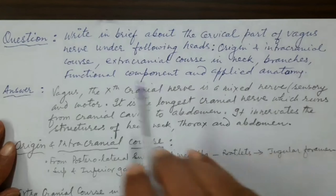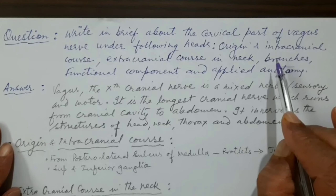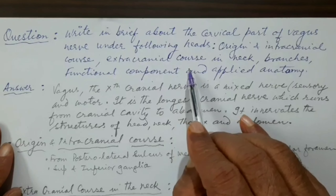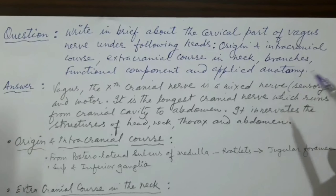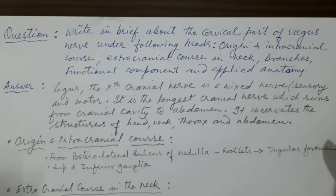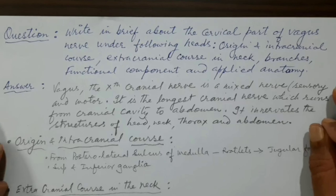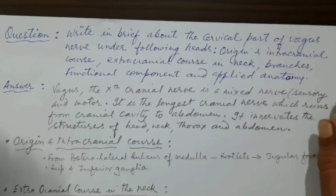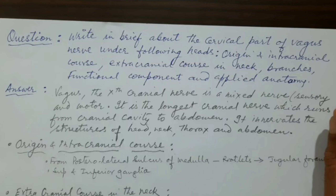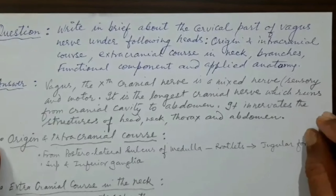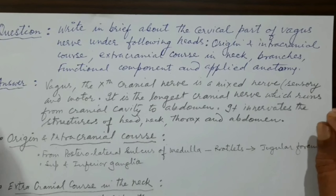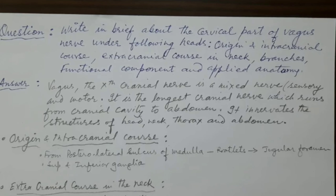The question is: write in brief about the cervical part of the vagus nerve under the following heads — origin, that means its attachment onto the brain stem; its intracranial course; extracranial course in the neck only; then the branches within the neck only; the functional components, what kind of motor and sensory fibers this nerve carries; and lastly the applied anatomy of the vagus nerve in relation to its injury within the neck.